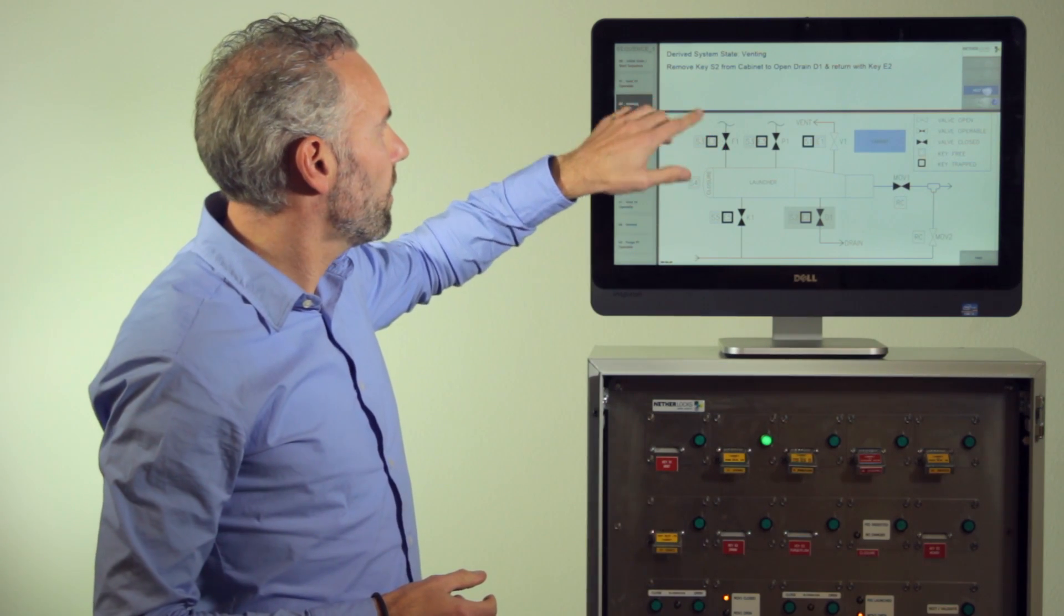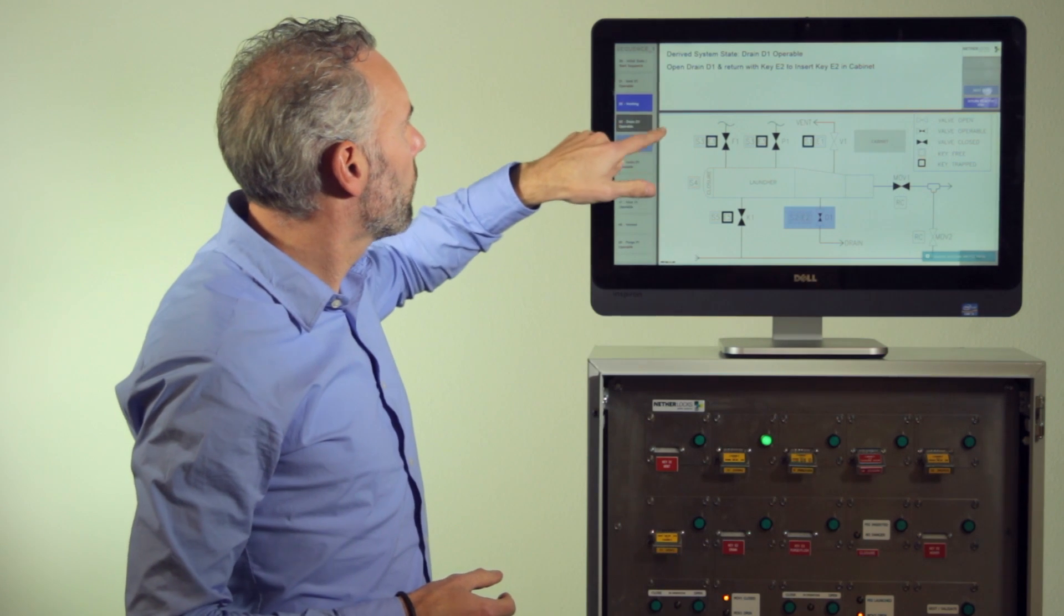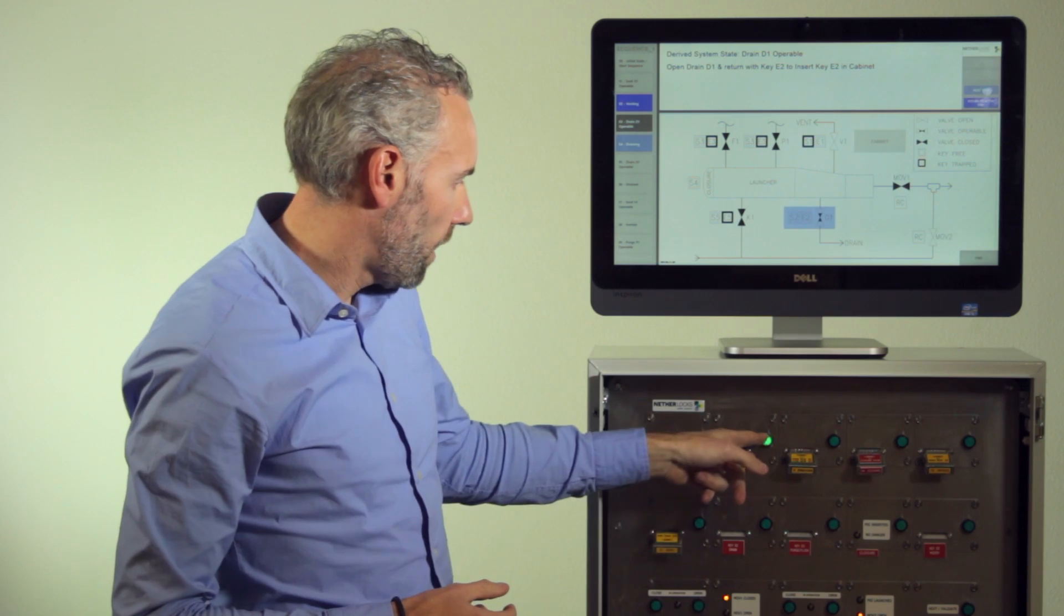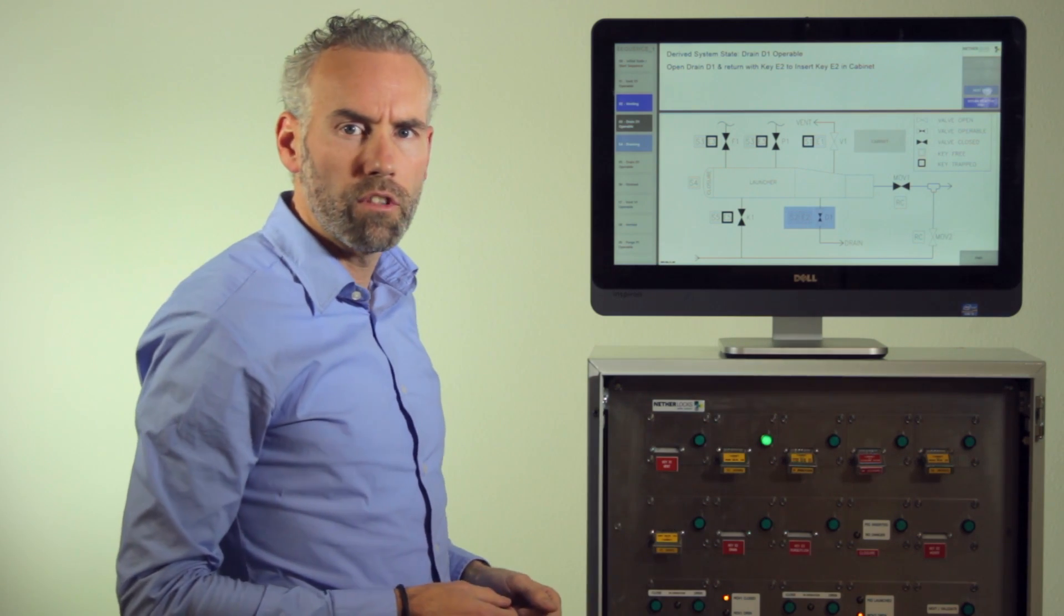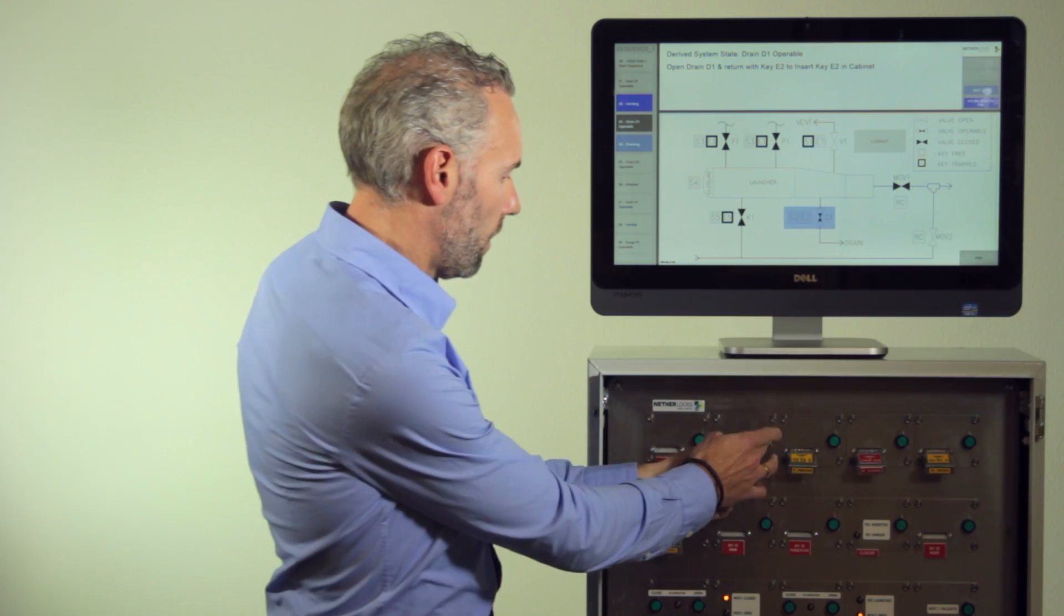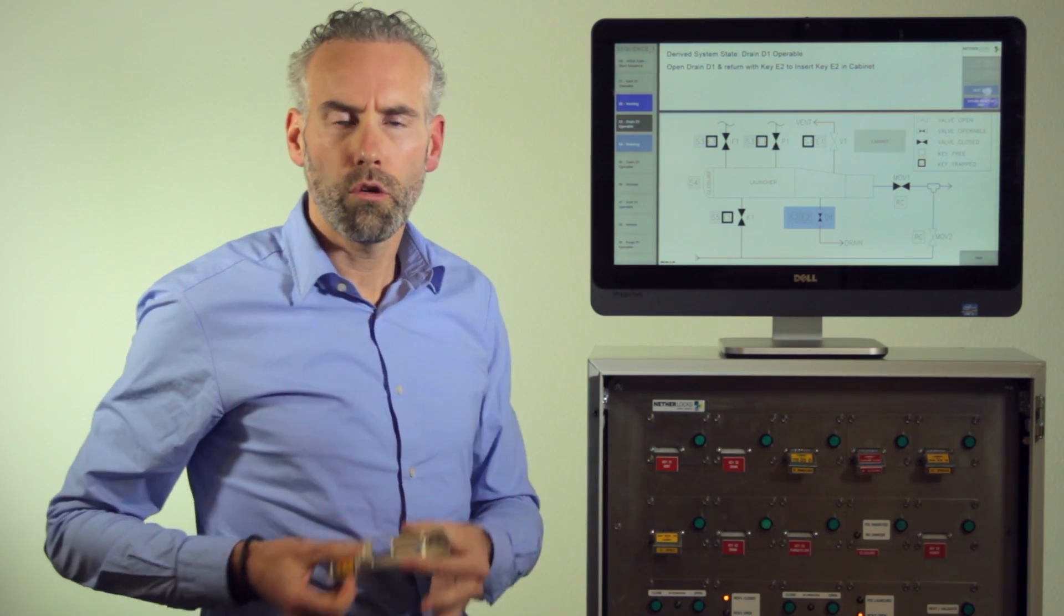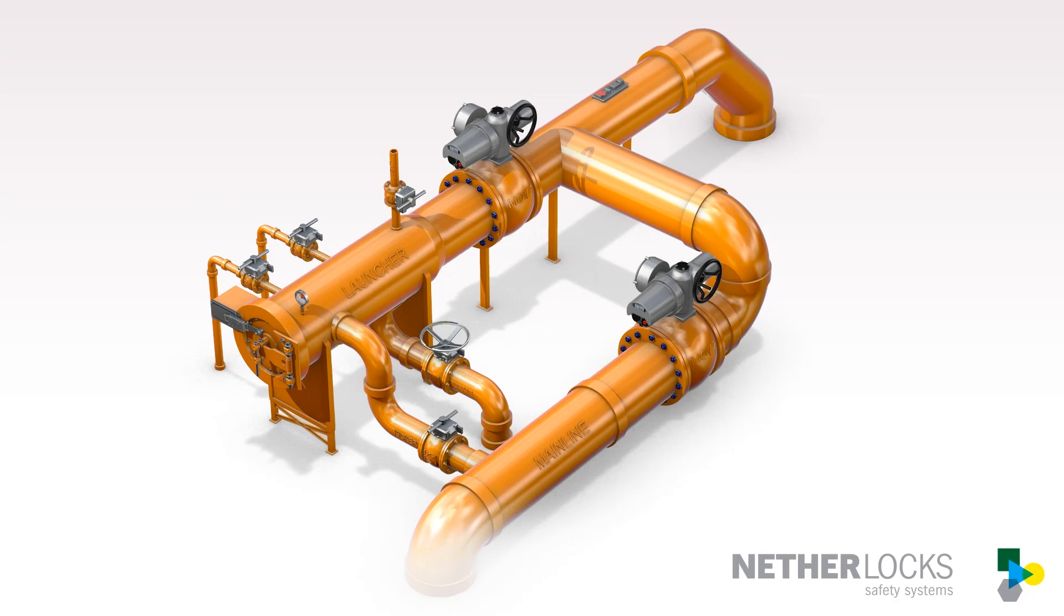The system has detected the key and now informs me to take the next key which is D1. The light of the position for D1 lights up indicating I can take that key. I will now take this key and go to the pig launcher to open the drain valve.